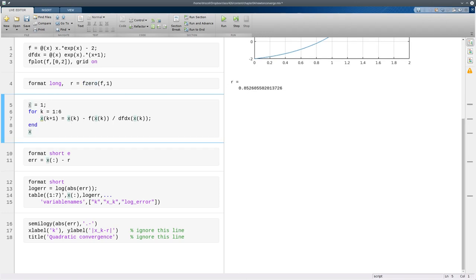Here's Newton's method. I start off with 1 as my initial estimate, and then I'll do 6 iterations where I just apply Newton's formula each time. And if we look at the results of that, we see that it does seem to be converging to 0.853.